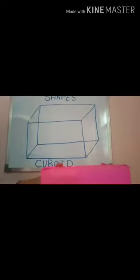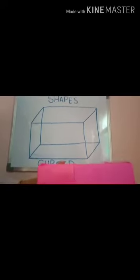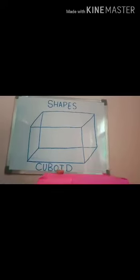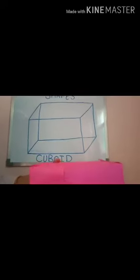A cuboid has six faces. How many faces? Six faces. Let's count: one, two, three, four, five, six. One, two, three, four, five, six.